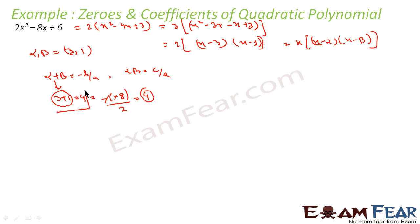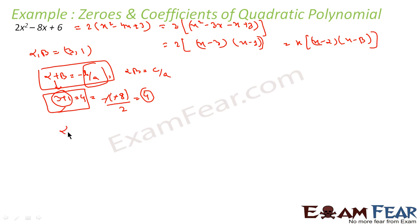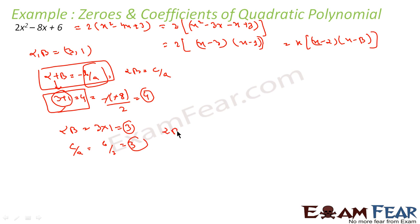The value we got from the actual values of alpha and beta matches what we get from the formula −B/A. So we can say this formula is true. Similarly, α·β = 3 × 1 = 3, and C/A = 6/2 = 3. So 3 = 3, confirming α·β = C/A.